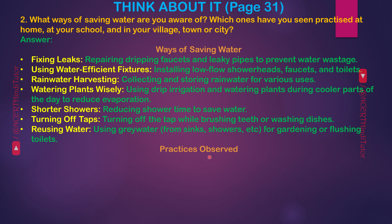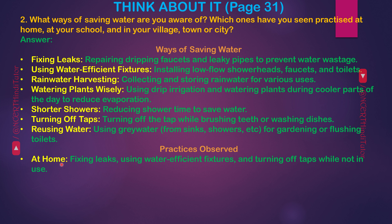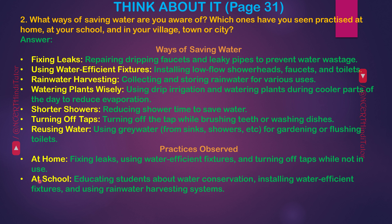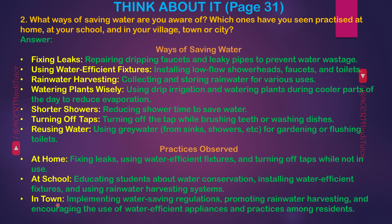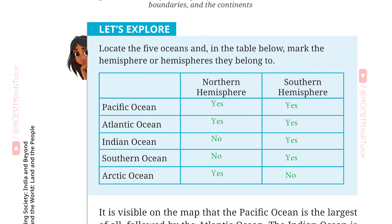Practices observed: at home — fixing leaks, using water-efficient fixtures, and turning off taps while not in use. At school — educating students about water conservation, installing water-efficient fixtures, and using rainwater harvesting systems. In town — implementing water-saving regulations, promoting rainwater harvesting, and encouraging the use of water-efficient appliances and practices among residents.